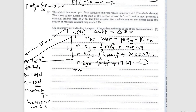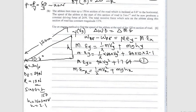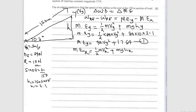Mechanical energy at X = ½ × 84 × 3² + 0 (no height at X) = 42 × 9 = 378 J.